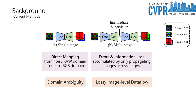As we explore the landscape of existing methods for low-light image enhancement, we find that they generally fall into two categories: single-stage methods and multi-stage methods. Each approach has its own inherent problems that limit effectiveness. Single-stage methods directly learn the mapping from noisy raw images to clean RGB images. While this seems straightforward, it introduces a problem known as domain ambiguity, arising because the method tries to learn a complex transformation across different domains in a single step. This significantly increases learning difficulty, making it harder for the network to fit the data accurately, and the performance is often sub-optimal.